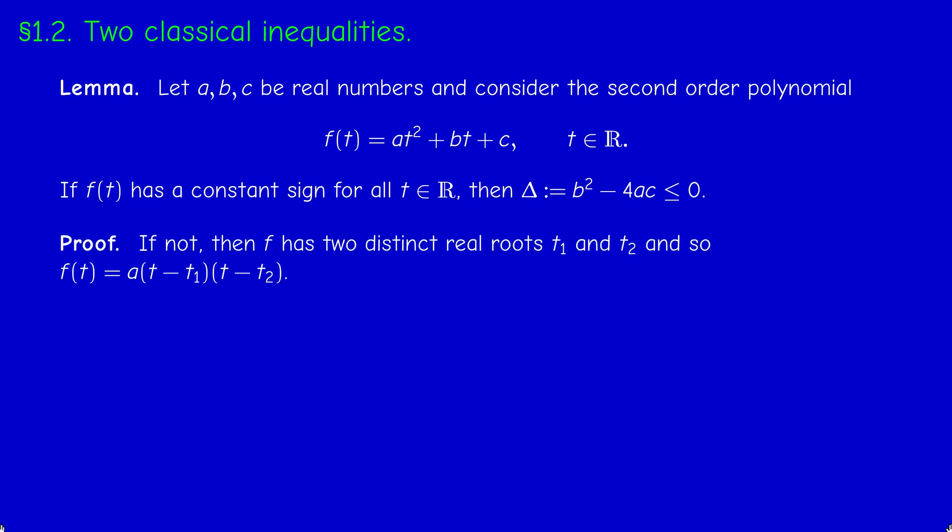The reason is very simple, because if the discriminant was positive, then the polynomial would have two distinct real roots, t1 and t2. And so we can factor it as a(t minus t1)(t minus t2). But as you know, F would change sign in this case. Between the roots it would be positive or negative, depending on the sign of a. So it would not be of constant sign. And this is the contradiction.